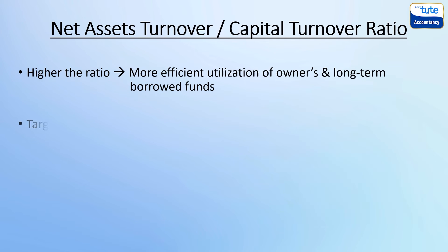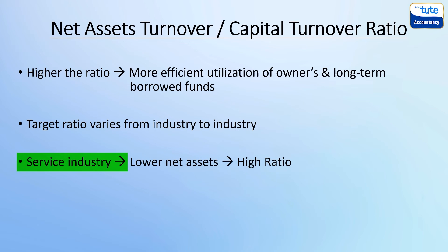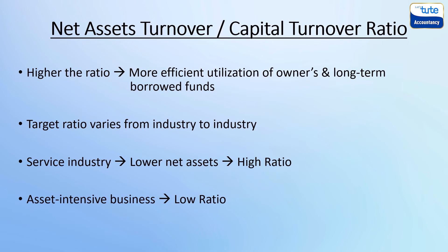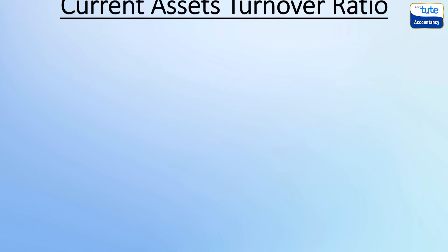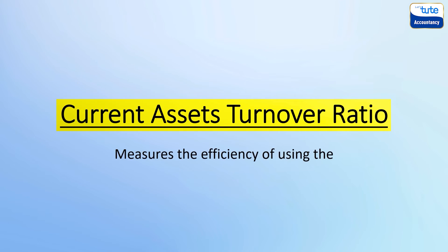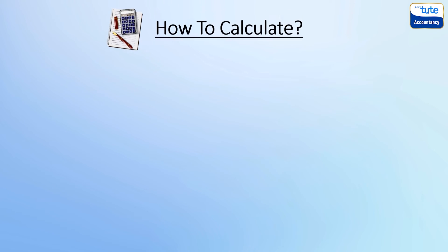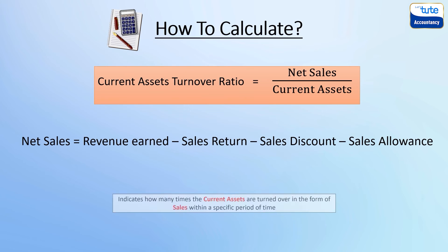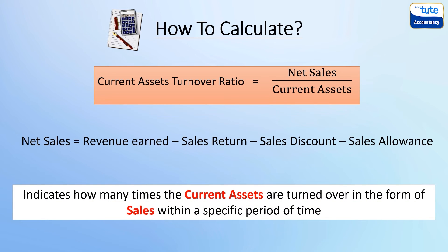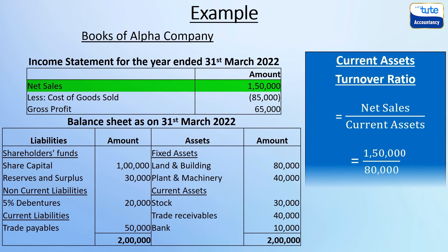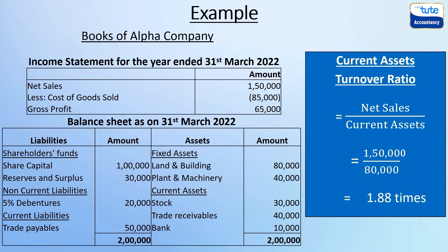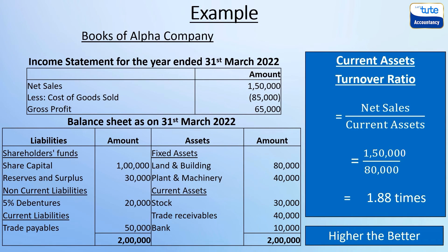The target capital turnover ratio varies from industry to industry — it would be high in the service industry where capital employed or net assets are comparatively lower, and much lower in more asset-intensive businesses. Next, the current assets turnover ratio measures the efficiency of using current assets. It is calculated by dividing net sales by current assets, indicating how many times current assets are turned over in the form of sales within a specific period. In this example, net sales are 1,50,000 and total current assets are 80,000, giving a current assets turnover ratio of 1.88 times.